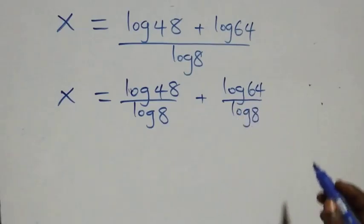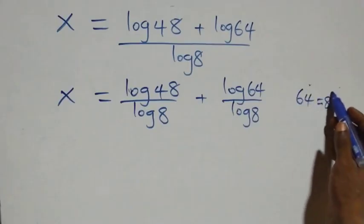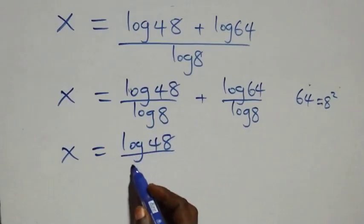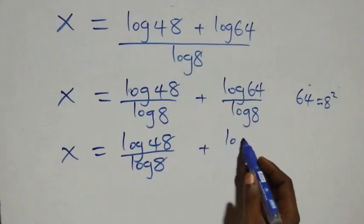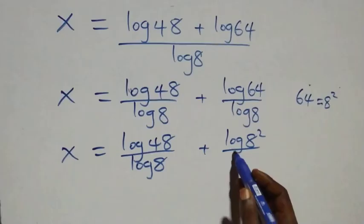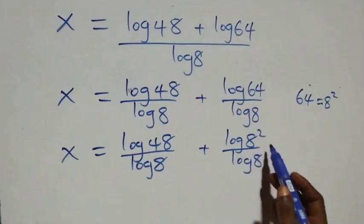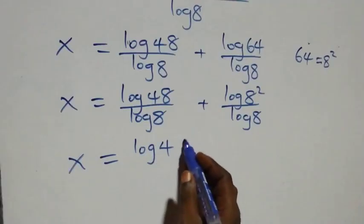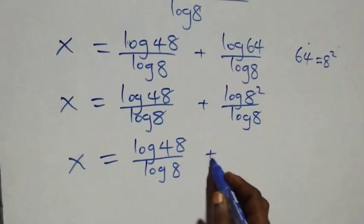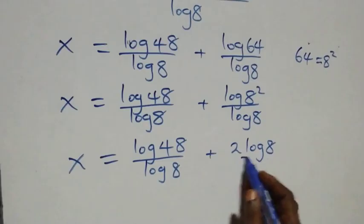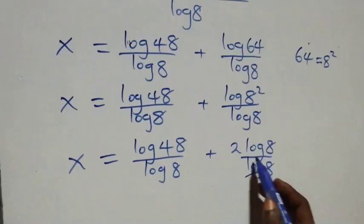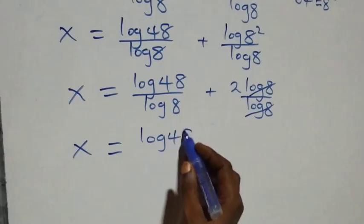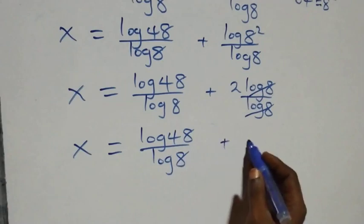We can express sixty-four as eight squared. So log sixty-four over log eight becomes log of eight squared over log eight. Applying the power rule, the two comes down, giving two times log eight over log eight. Log eight cancels, leaving two. So that term simplifies to two.